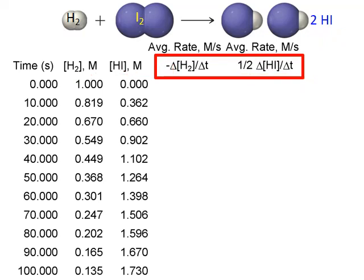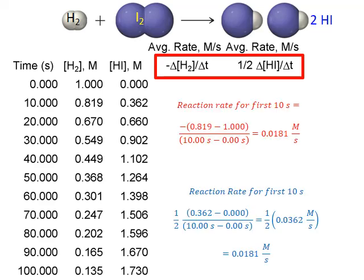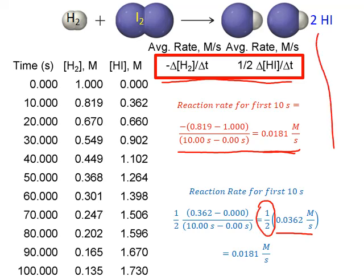Using the values we calculated previously, the net reaction rate for the first 10 seconds is as follows. For hydrogen, the rate of loss equals the net reaction rate of 0.0181 moles per liter per second. The rate of appearance of hydrogen iodide was twice that value, but when we apply the one-half factor — dividing by the coefficient of two — we end up with the exact same overall reaction rate of 0.0181 moles per liter per second for that first 10-second interval.